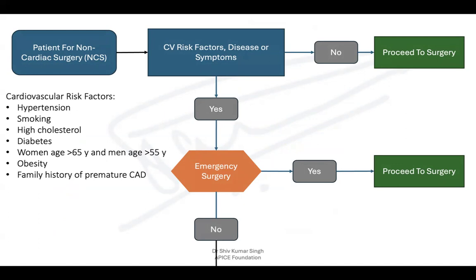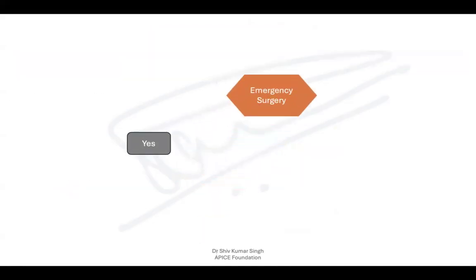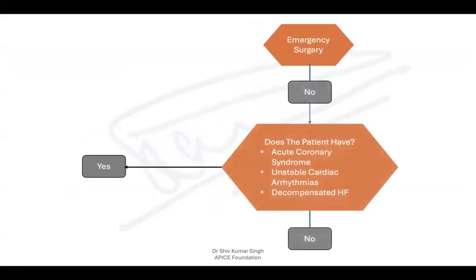If risk factors, disease, or symptoms are present, you have to determine whether it is an emergency or elective surgery. If it is emergency surgery, we have no time to assess further, so we proceed to surgery. If it is not an emergency, we then need to look at whether the patient has acute coronary syndrome.